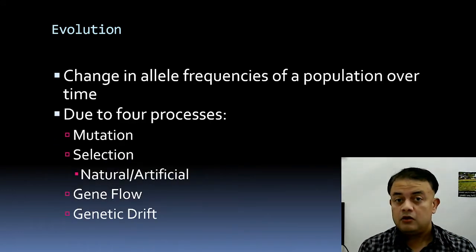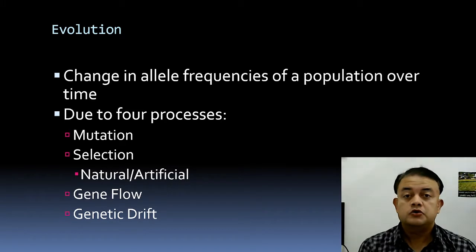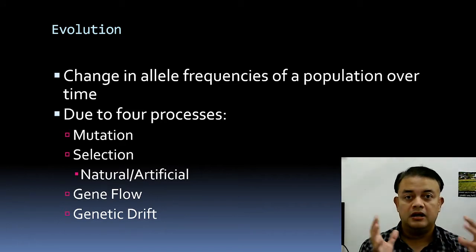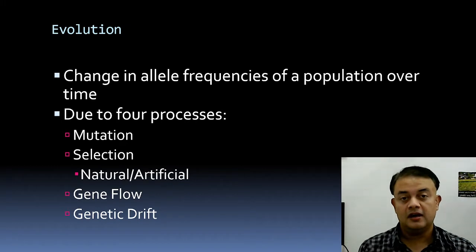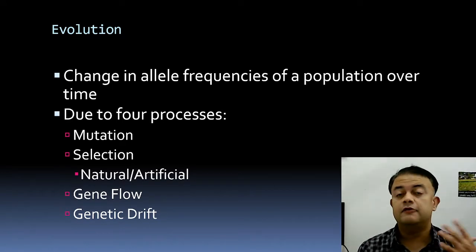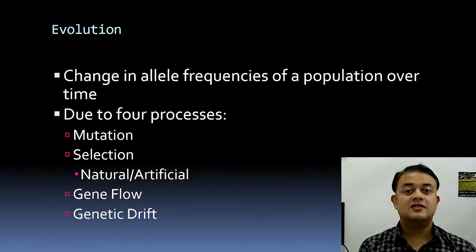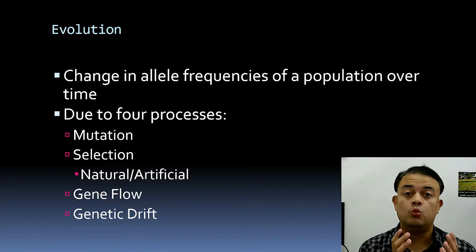Evolution is nothing but a change in allele frequencies of a population over time. Allele is a better term than gene frequency because it refers to variants of the same gene. In diploid organisms, we have two copies — maternal and paternal. Gene frequencies change from one generation to another; evolution does not happen within an individual's lifetime — you need at least one generation.